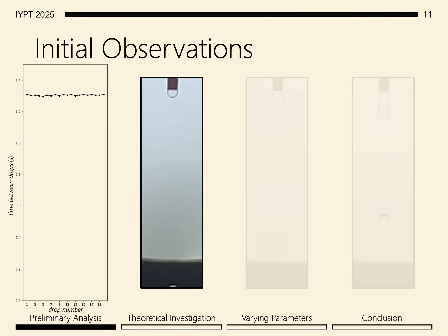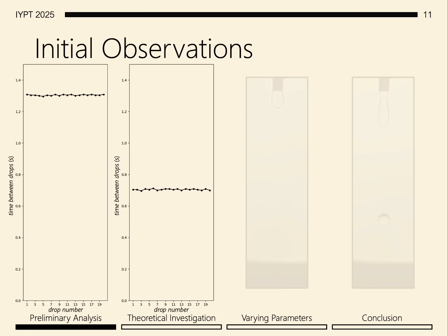As we increase the flow rate, a similar graph shows us again a constant time between drops, but this time at a lower time of around 0.7 seconds. Increasing the flow rate again, we still observe quite an even time between drops, now with an even lower time of just above 0.2 seconds.